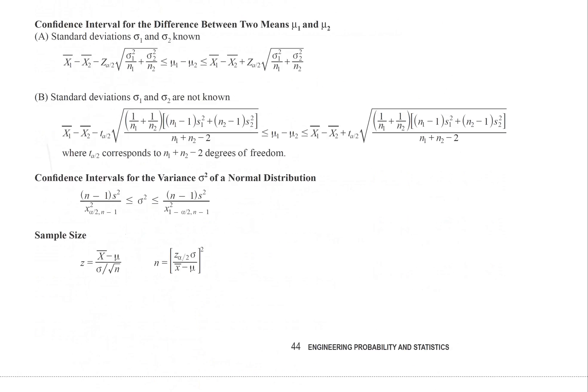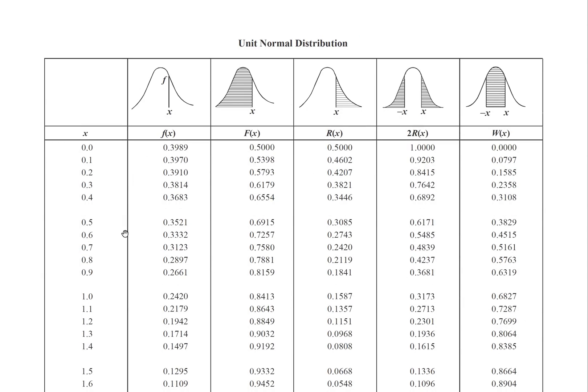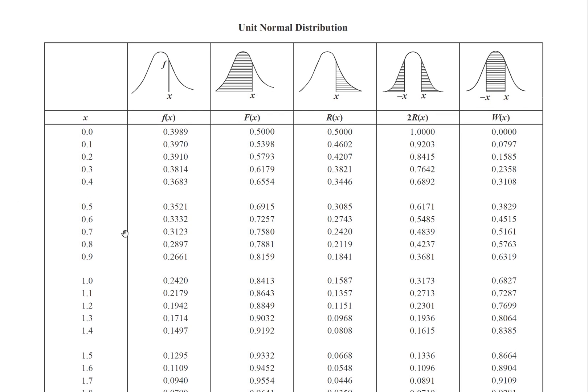We finally get to a unit normal distribution table. Here we have a column with x values that we are going to calculate, and we have this capital F(x), which is the probability that z is less than our random variable.